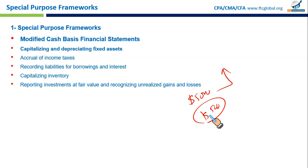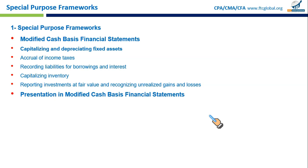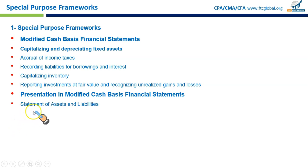For presentation in modified cash basis financial statements, the Statement of Assets and Liabilities — equivalent to a balance sheet — shows assets and liabilities resulting from cash transactions, including any modified items like fixed assets or loans.